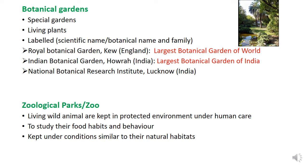In a botanical garden, you will see that the plants are labeled. The label shows the scientific or botanical name and its family. In NCERT, there are three botanical gardens mentioned. One is the Royal Botanical Gardens, which is in England — this is the largest botanical garden of the world. In India, there is the Indian Botanical Garden in Kolkata or West Bengal, which is the largest botanical garden of India. Besides it, there is the National Botanical Research Institute in Lucknow.